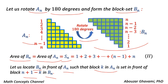As it is seen, block 1 in An is set in front of block n plus 1 minus 1, that is block n in Bn. Block 2 in An is set in front of block n plus 1 minus 2, that is n minus 1 in Bn. Up to block n in An, which is set in front of block n plus 1 minus n, that is block 1 in Bn.